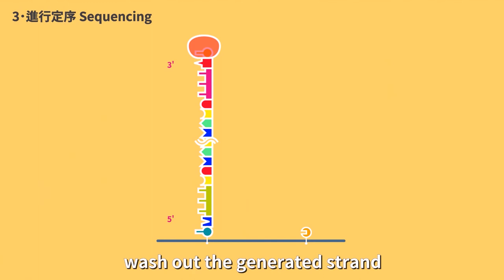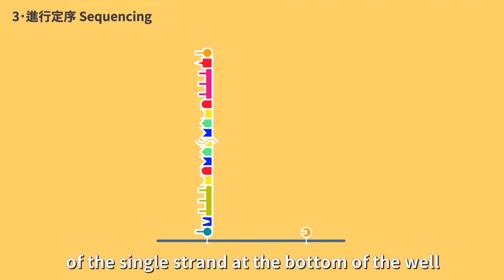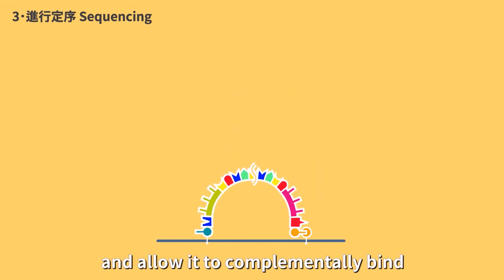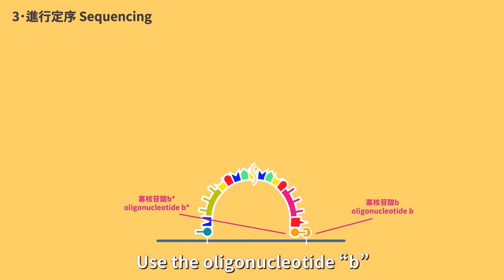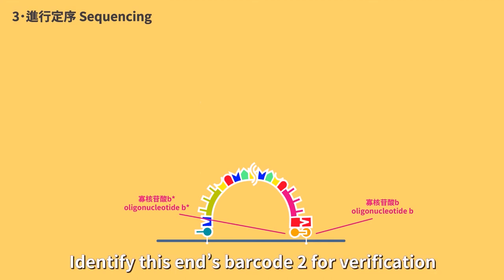Denature the double strand, wash out the generative strand, remove protection of the 3' end of the single strand at the bottom of the well, and allow it to complementally bind to nearby fixated oligonucleotide B. Use the oligonucleotide B as primer to proceed with small segment elongation. Identify this end's barcode 2 for verification.